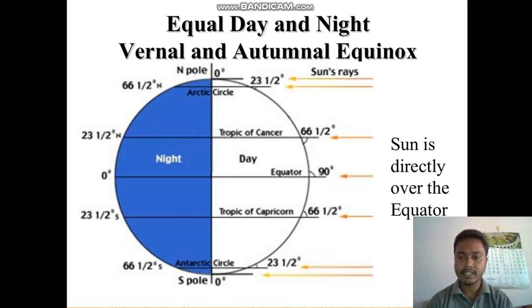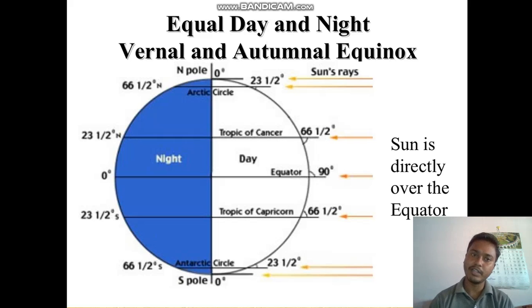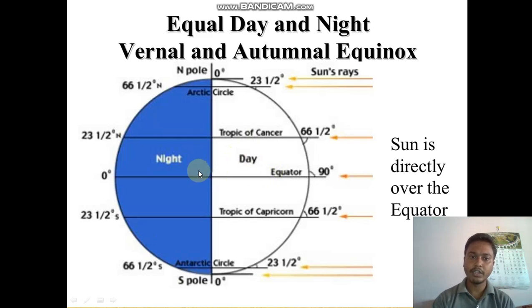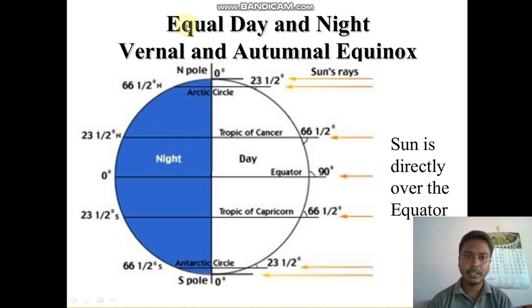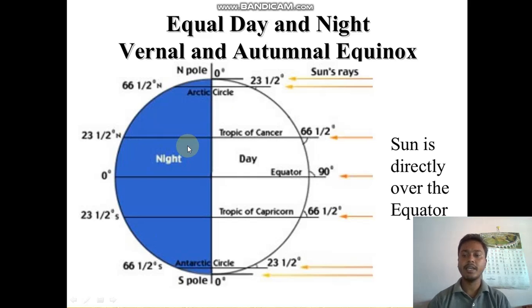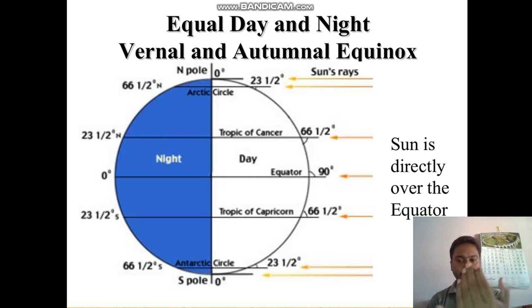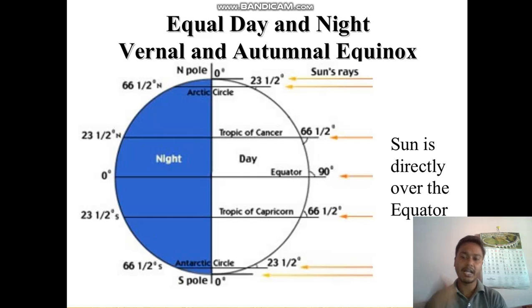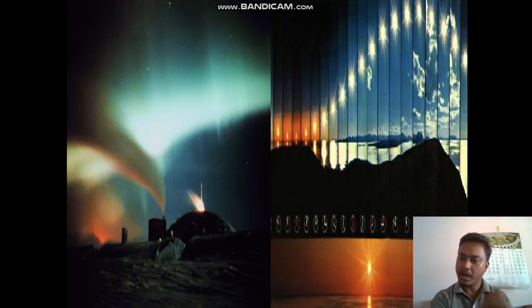We also studied solstice and equinox last class. Equinox is when the sun rays fall directly on the equator. When the sun rays fall directly on the equator, we get equal day and equal night. We get equal day and night on the vernal and autumnal equinox. This also changes as the Earth rotates — in spring this side changes and the scenario reverses. Once you understand one hemisphere, the other hemisphere gets the same thing on the other side — it's just vice versa.